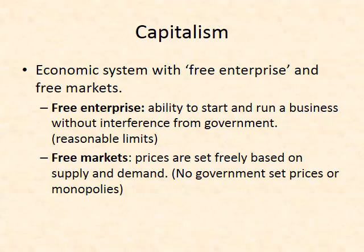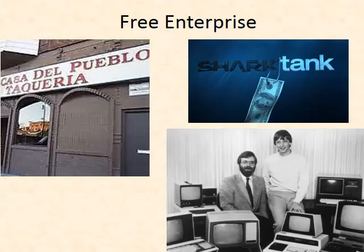Capitalism is also characterized by free markets. In a free market, prices are set freely based on supply and demand. You may notice the price of things changes — hot chips cost $0.25, then $0.50, then $0.75, then back to $0.50 — because the government does not set the price of hot chips. The company looks at supply and demand to determine how much something should cost. Businesses are free to set their own prices for their goods.